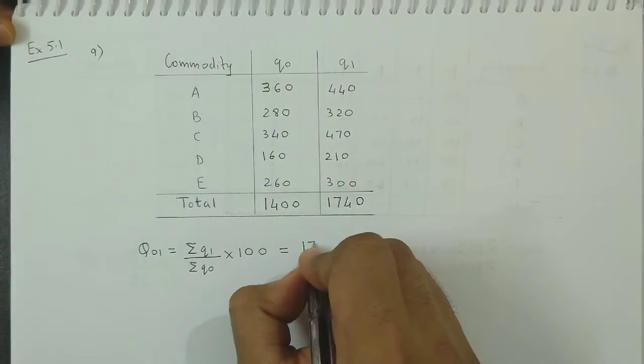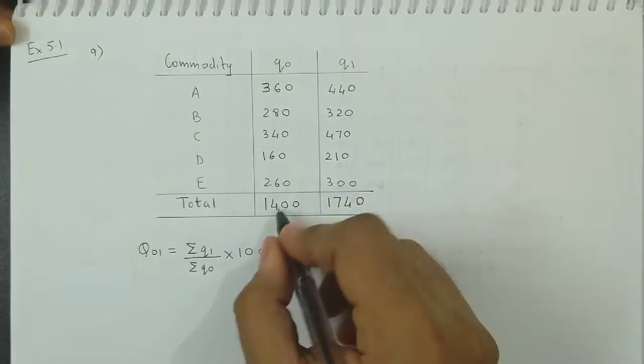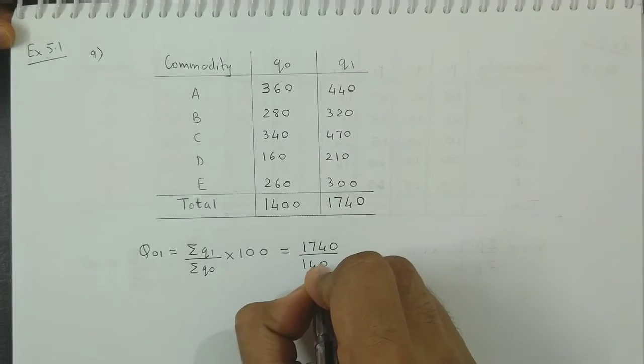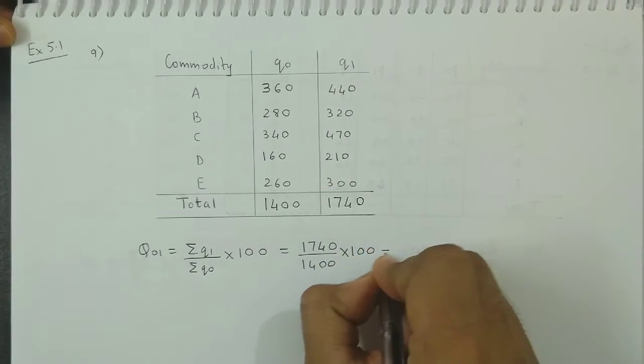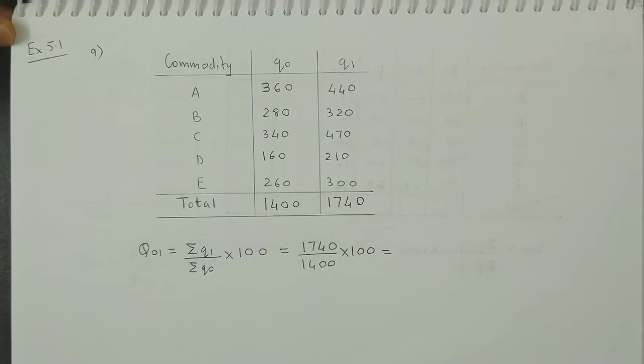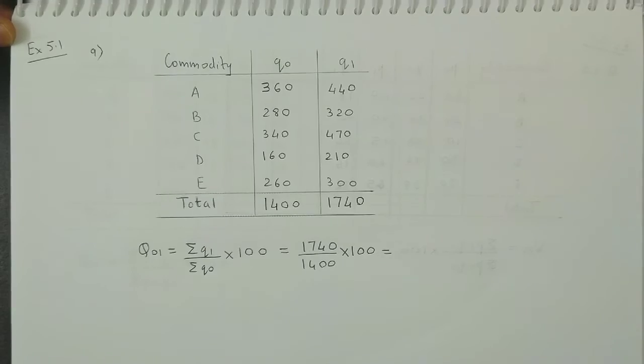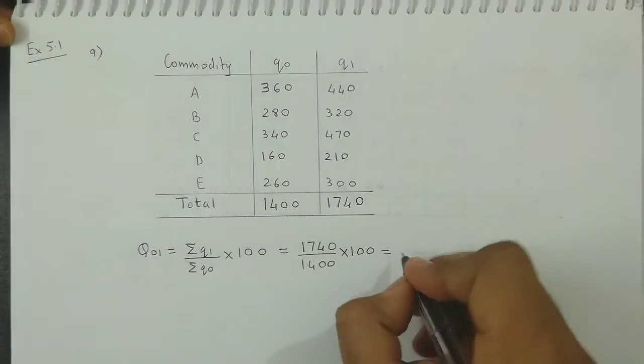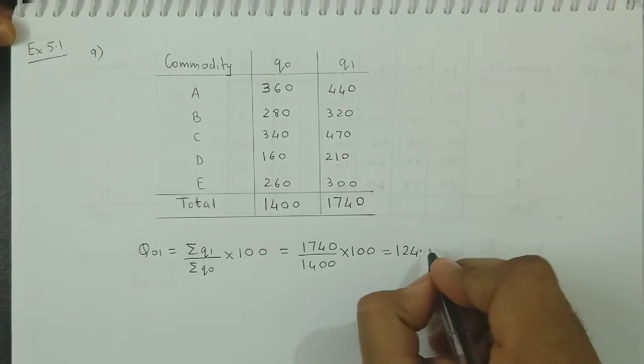Q1 total is 1,740, Q0 total is 1,400 into 100. Upon simplification, we get the answer as 124.285.